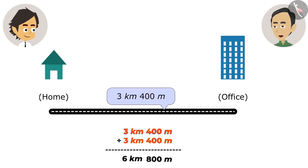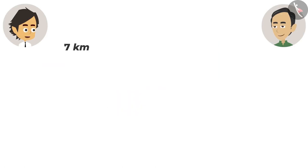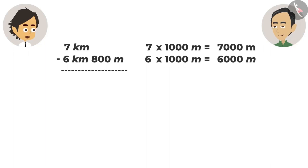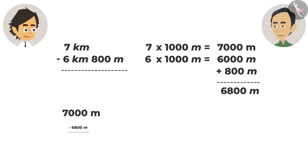How much less than 7 kilometers has Papa traveled? We subtract 6 km 800 m from 7 km. Since there are no meters with 7 km, we convert both to meters: 7 km = 7,000 meters; 6 km 800 m = 6,000 + 800 = 6,800 meters. Now subtract: 7,000 − 6,800 = 200 meters. Papa needs to cover 200 meters more to walk 7 kilometers a day.